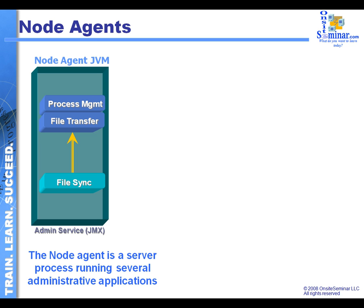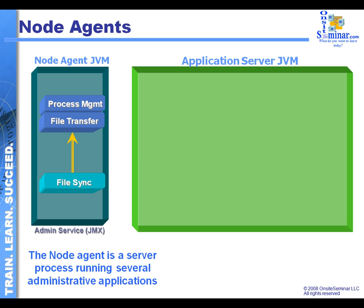The file transfer is the movement of the information — movement of the data and configuration information from the deployment side — the master configuration set, over into the local JVM. The process management side is going to be actually administering and managing the application server JVM that's going to be running on that particular physical box.